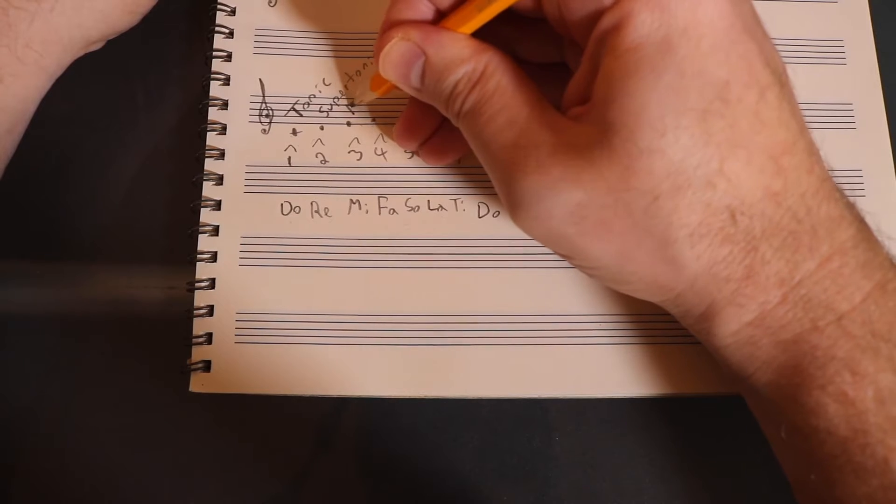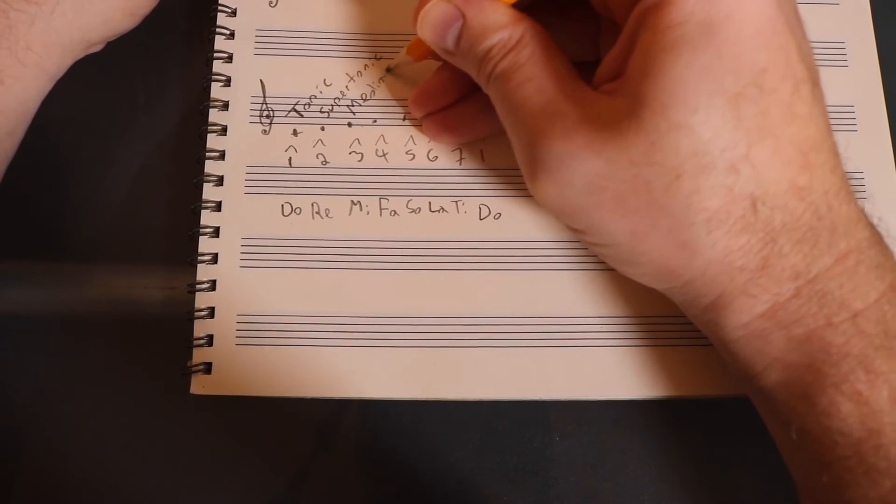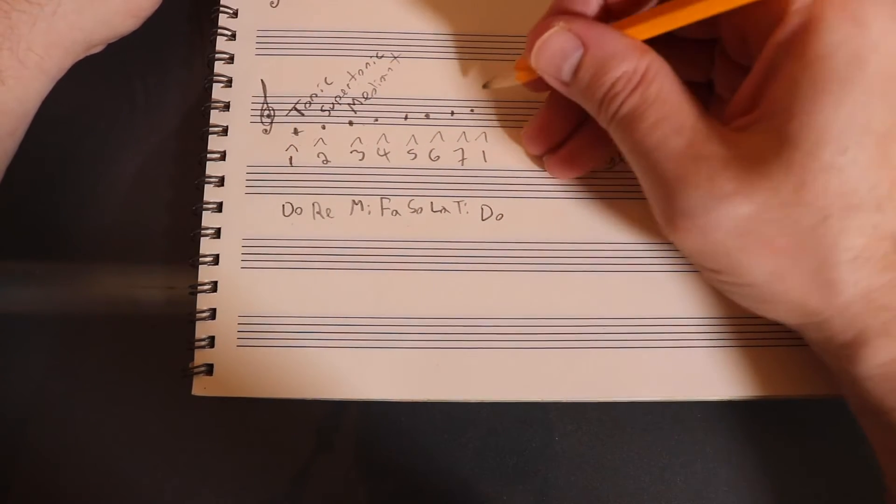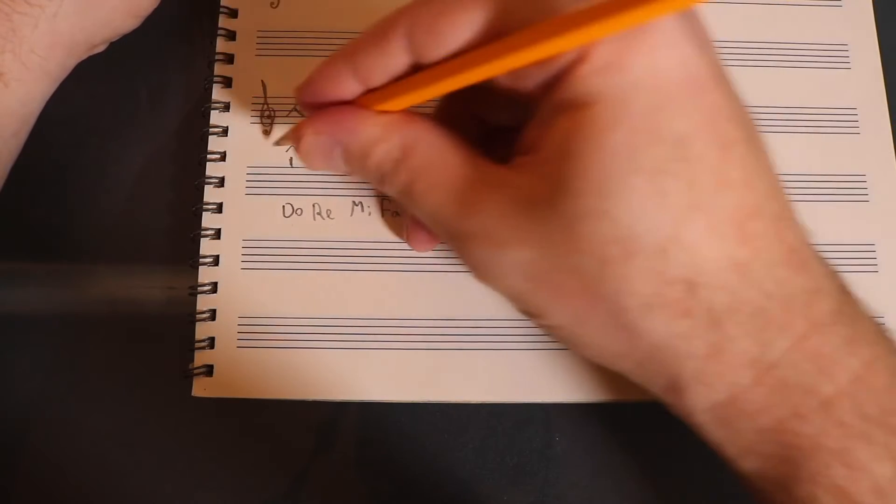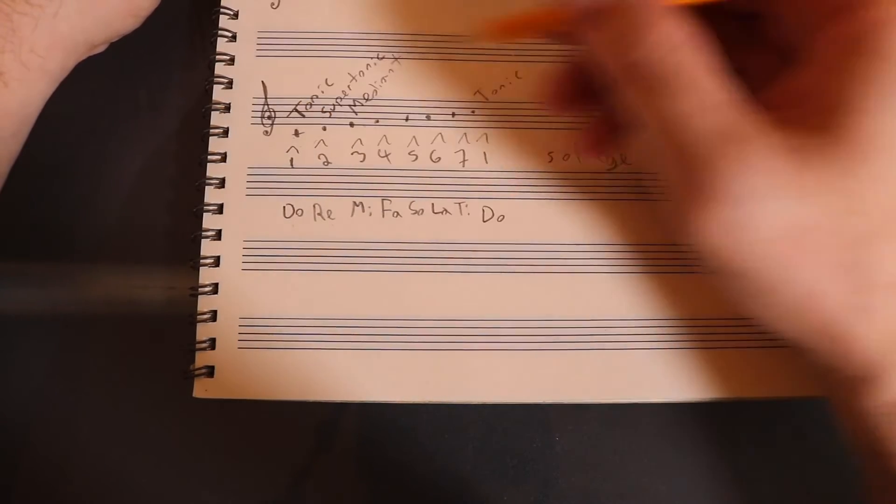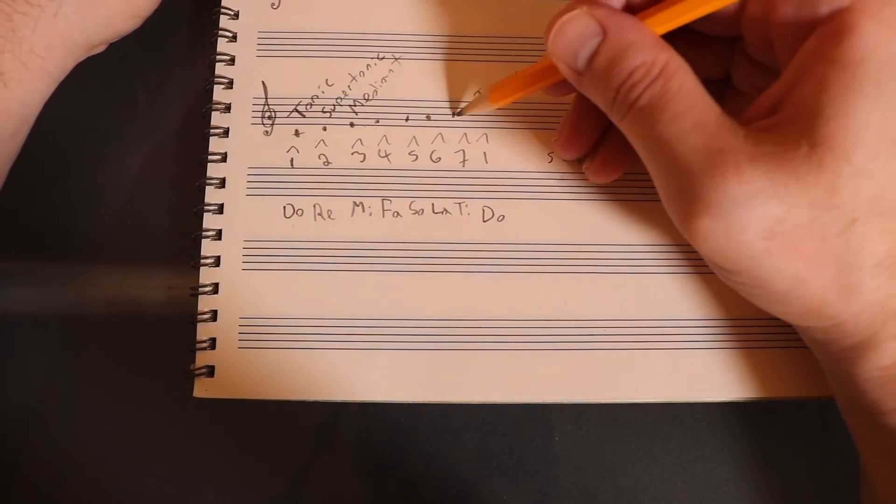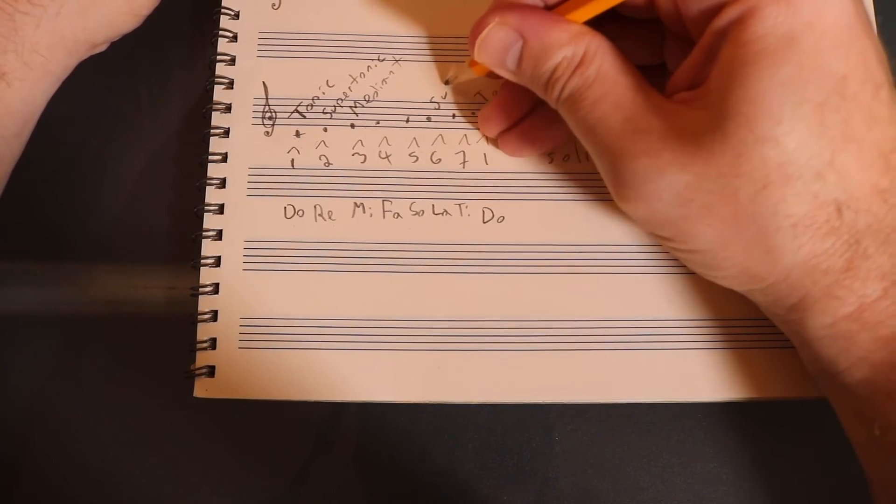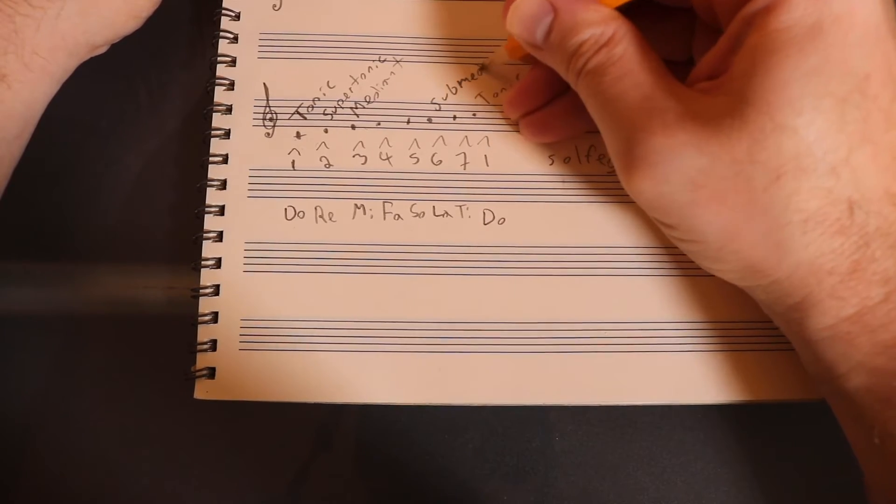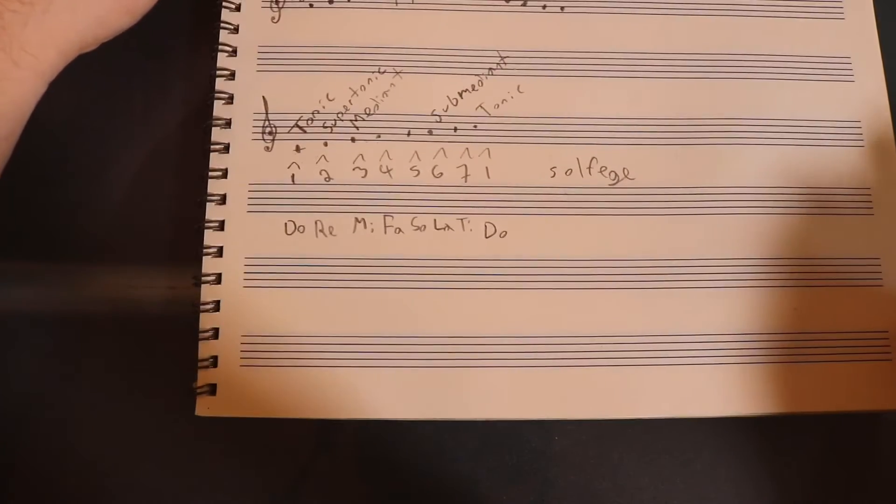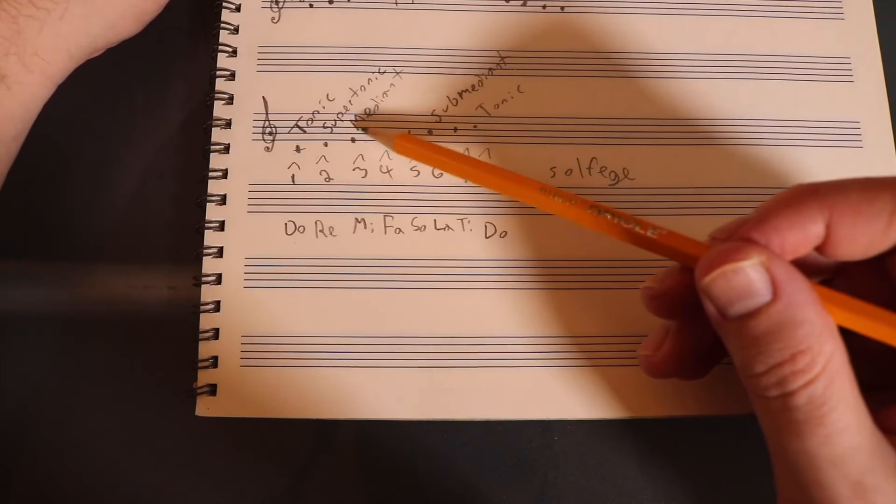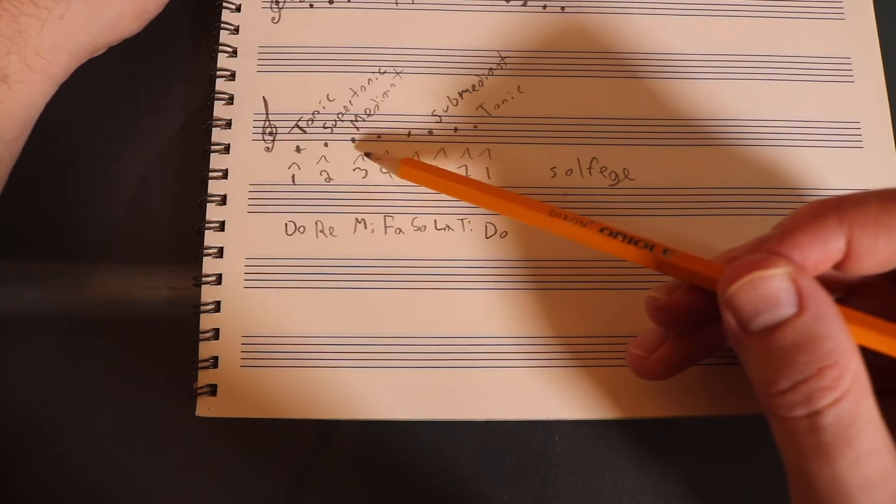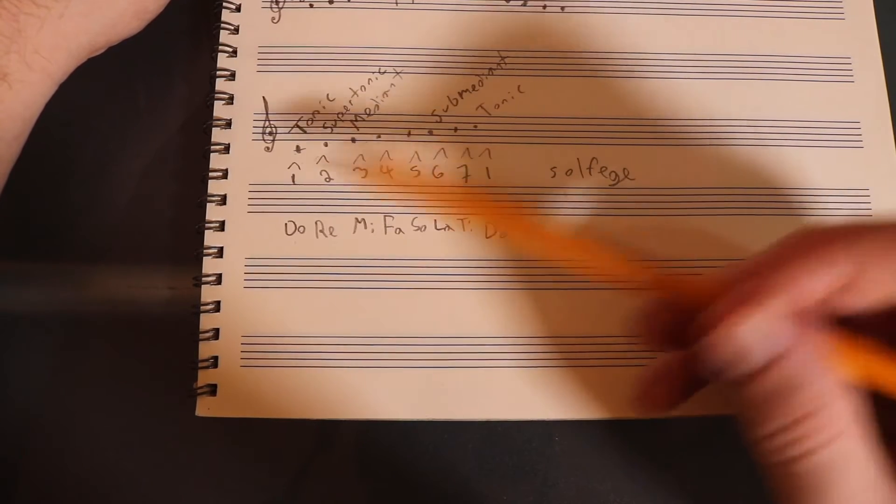This is tonic again. Remember first scale degree, they're both first scale degree, they're both called tonic. I'm going to skip down to six. That's the sixth scale degree. It's called submediant. Here's an easy way to remember this. If you can remember that mediant is the third scale degree, mediant means like go up three. Sub means down. Go down three.